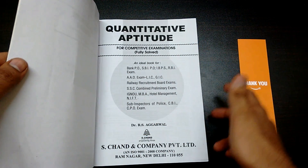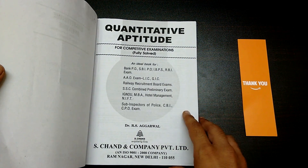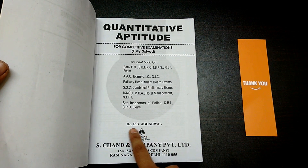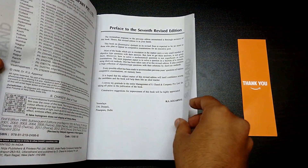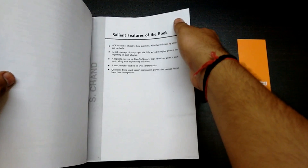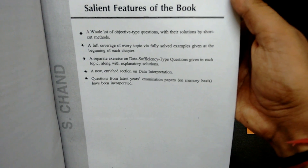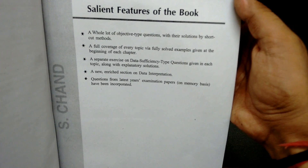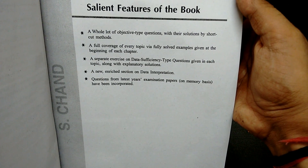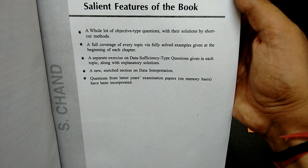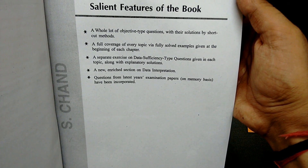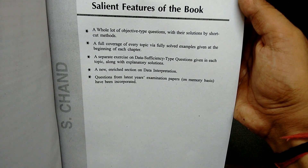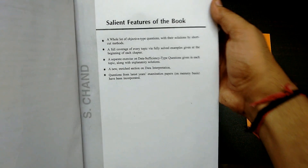As discussed earlier, this book covers quantitative aptitude for many examinations. The author is R.S. Aggarwal and the publication is S. Chand and Company Private Limited. The features of this book include: objective type questions with solutions via shortcut methods, full coverage of every topic with fully solved examples at the beginning of each chapter, a separate exercise on data sufficiency questions with explanatory solutions, a new enriched section in data interpretation, and questions from latest exam papers on a memory basis.